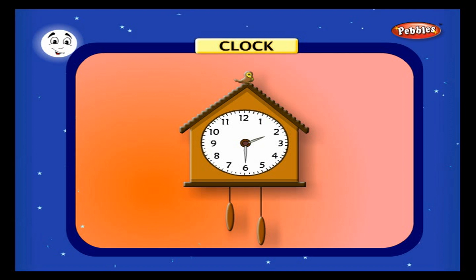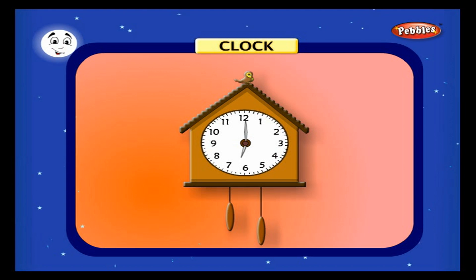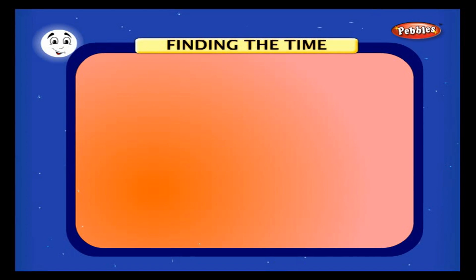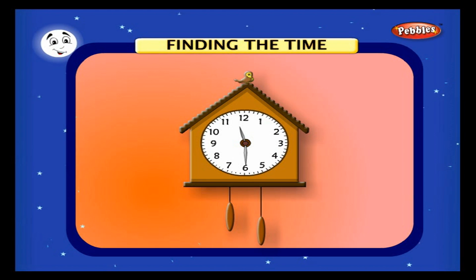The hour hand takes one hour to move from one number to another. When the hour hand completes one full rotation of the dial, it covers 12 hours, which is half a day. When the hour hand completes two full rotations of the dial, it covers 24 hours, which is a full day.